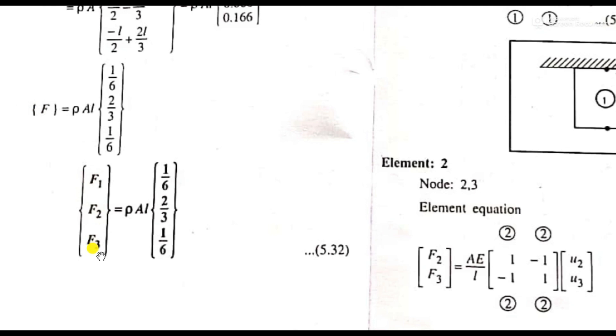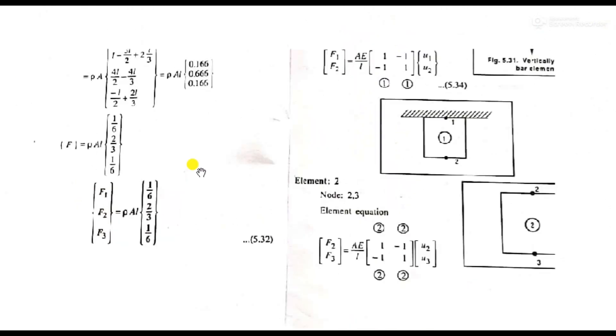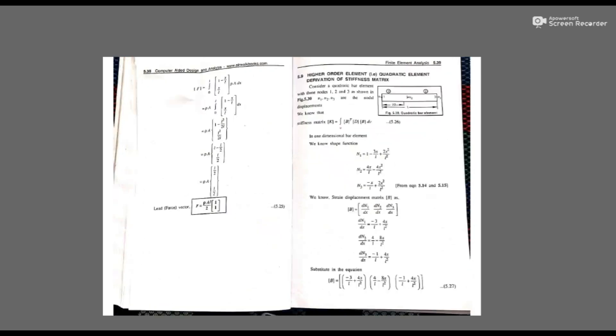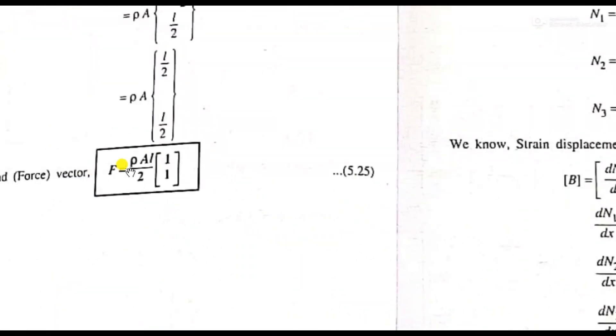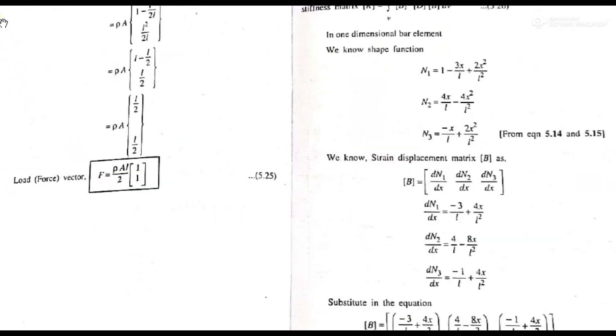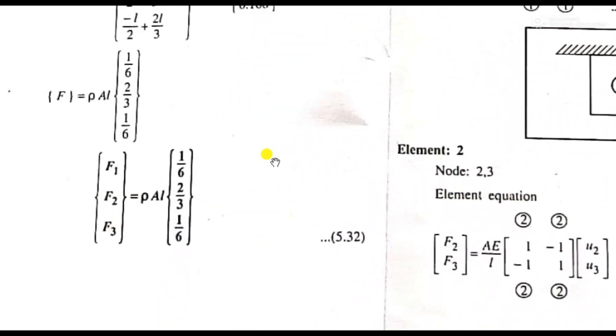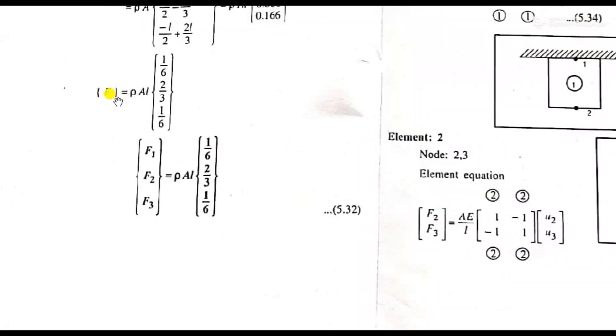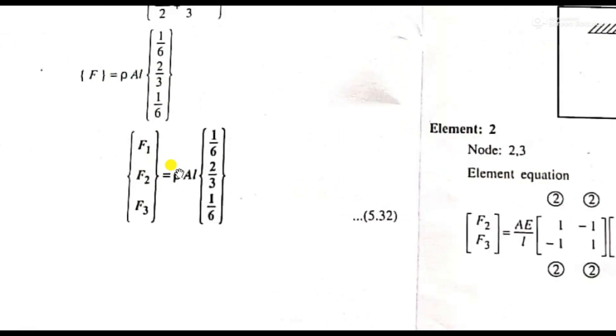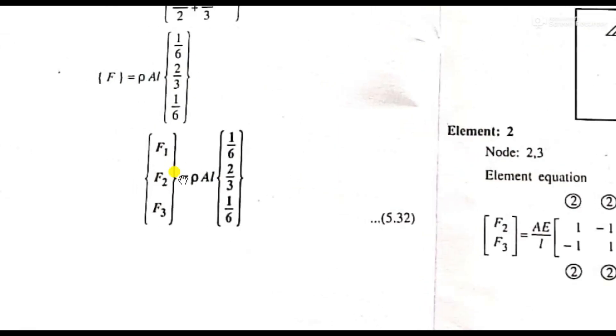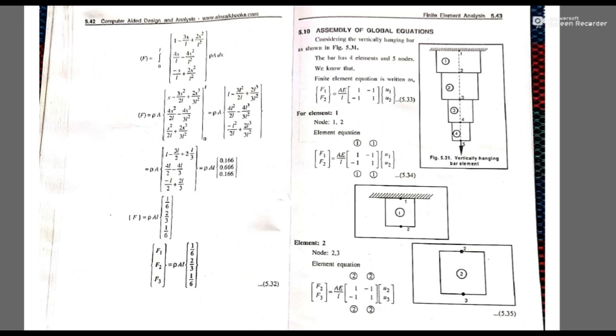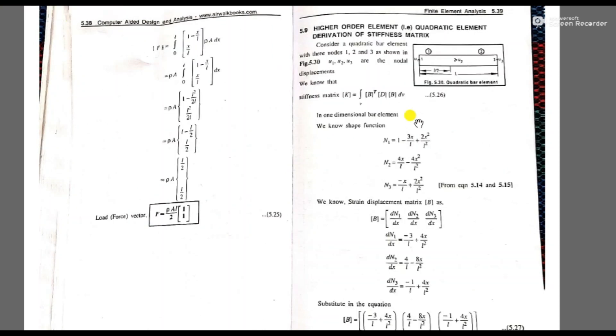The force matrix, we write as F1, F2, F3 for the three nodes. Writing this in row form as rho A L by 2, we integrate and get the final load vector as rho A L times [1/6, 2/3, 1/6]. These values represent the load at each node. This is the load vector for the quadratic element with three nodes.